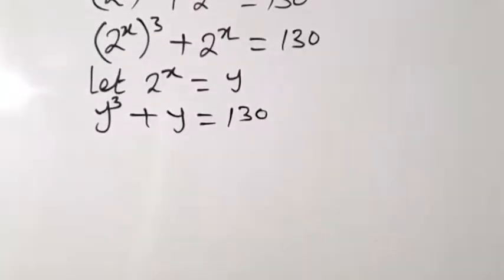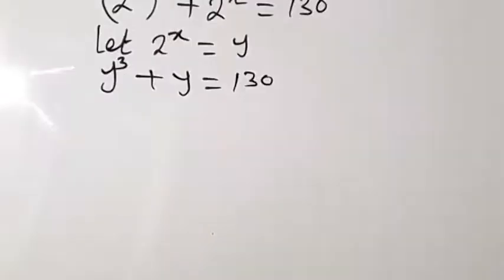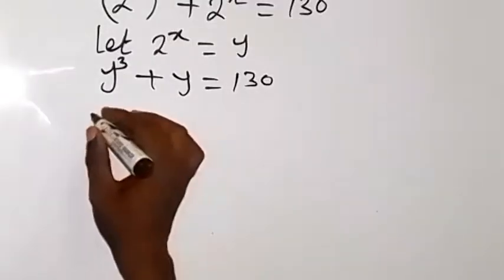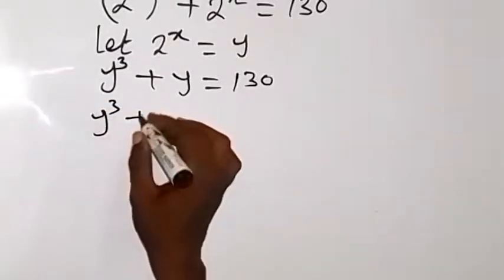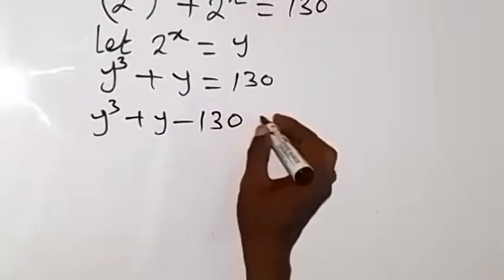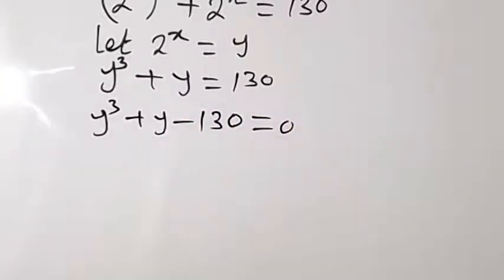We have replaced 2 raised to power x as y. Then let's bring 130 to this side and we have y cubed plus y minus 130 now then equals 0. This has formed like a cubic equation here.